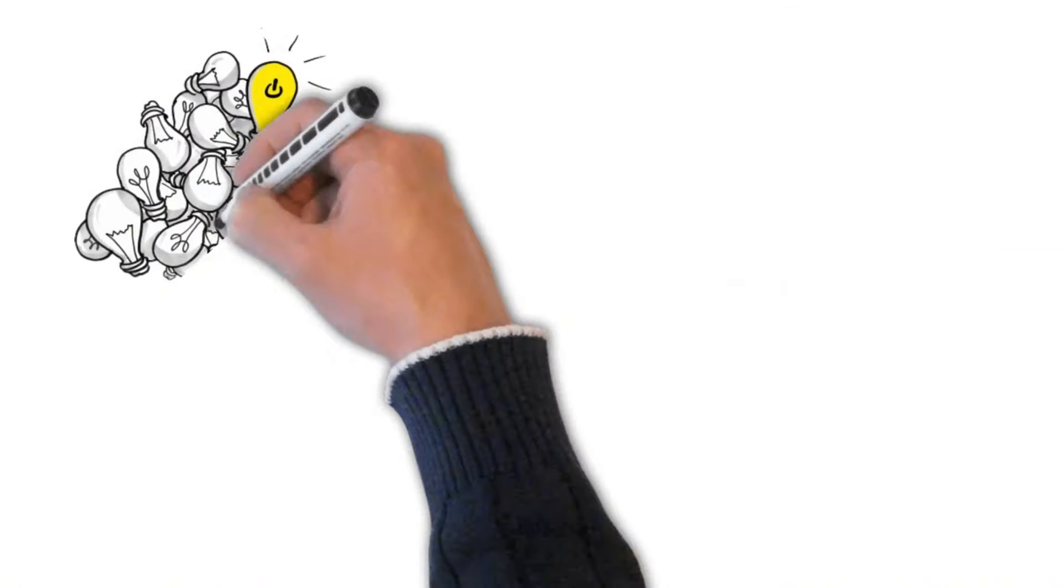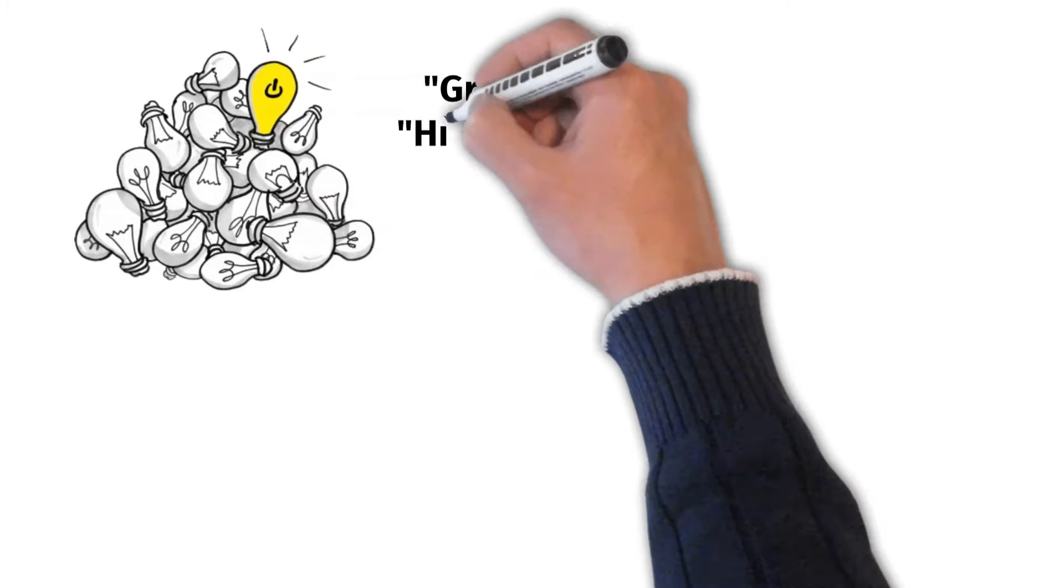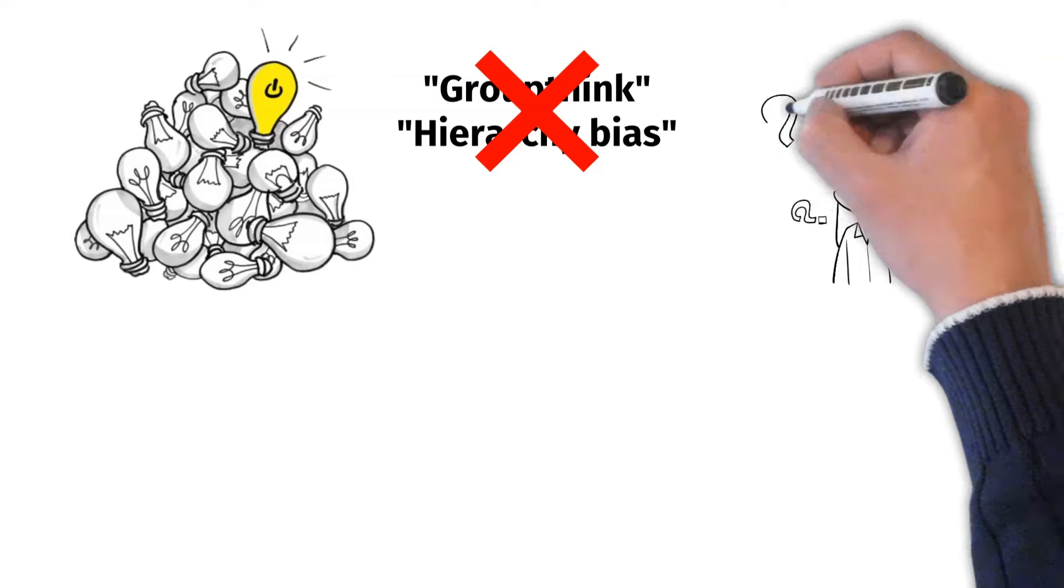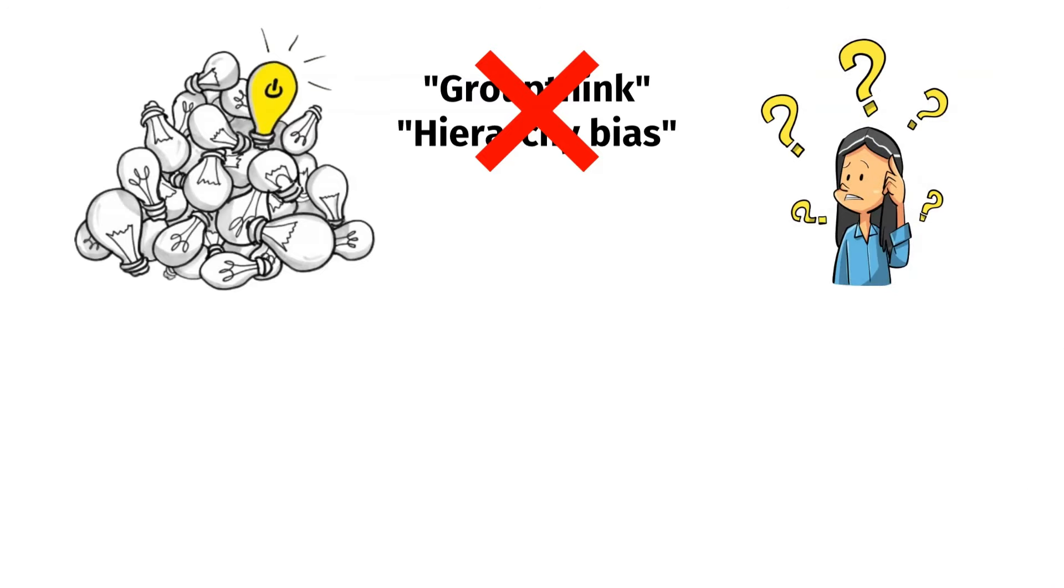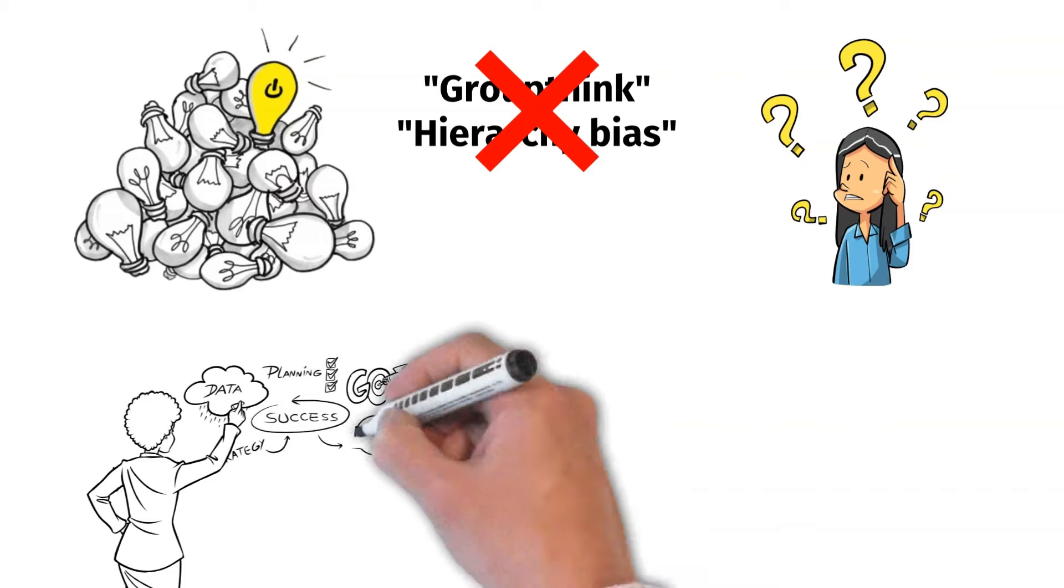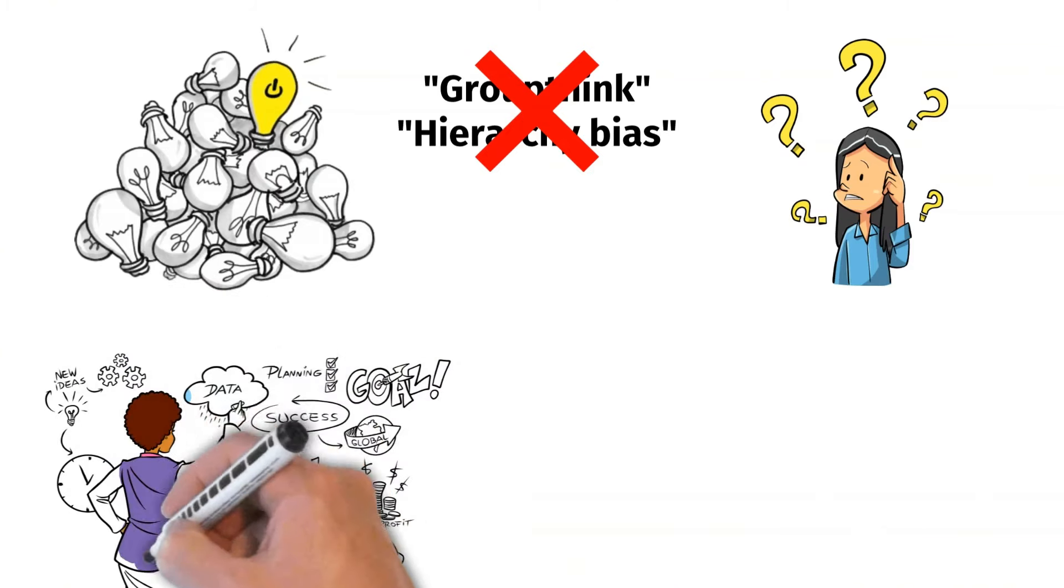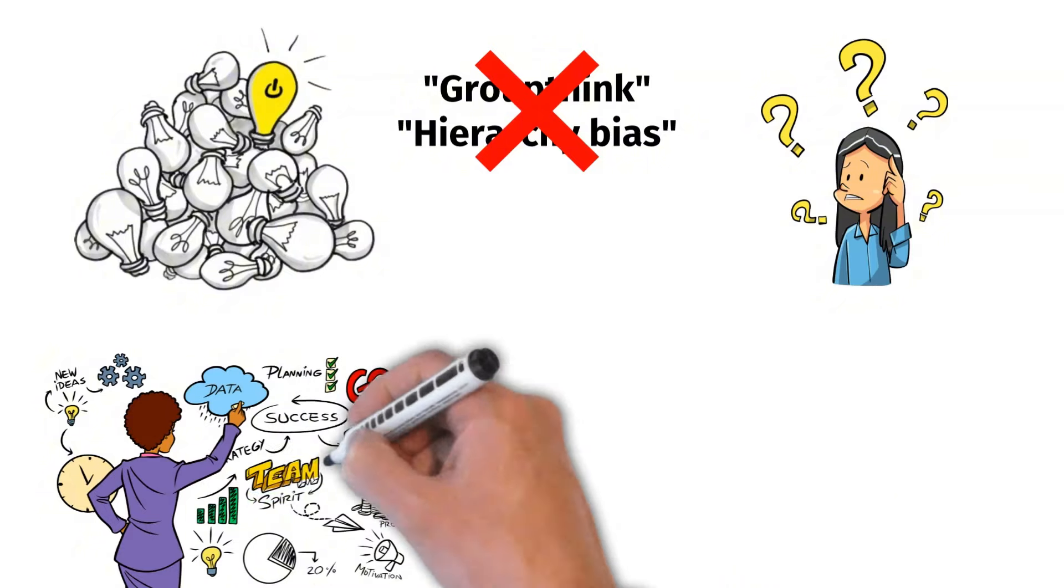By embracing the idea of meritocracy, you can avoid the groupthink and hierarchy bias that can prevent great ideas from being heard or implemented. In addition to increasing the chances of finding and implementing winning ideas, an idea meritocracy can also help to avoid costly mistakes.